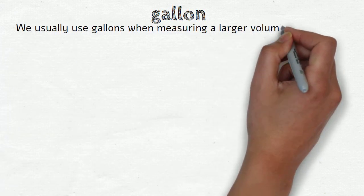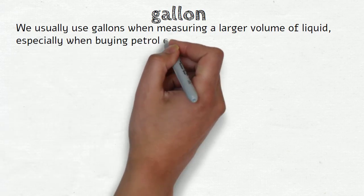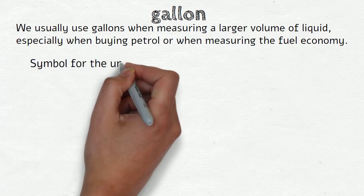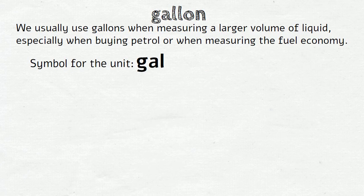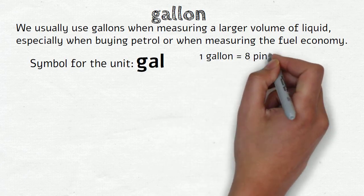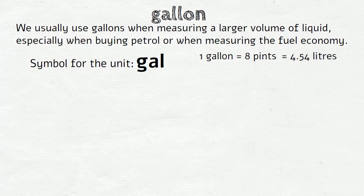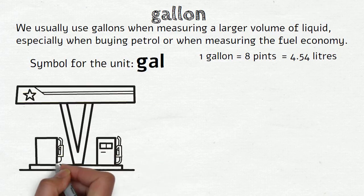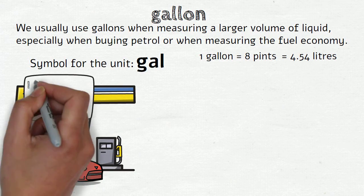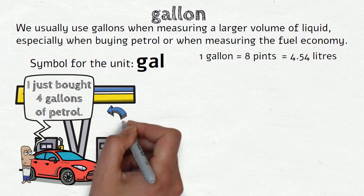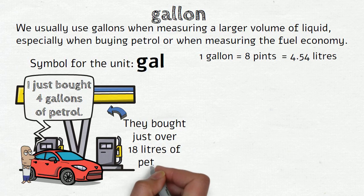Gallon. We usually use gallons when measuring a larger volume of liquid, especially when buying petrol or when measuring fuel economy. The symbol for this unit is gal. And 1 gallon equals 8 pints. It also equals 4.54 liters. So if someone says 'I just bought 4 gallons of petrol,' it means that they bought just over 18 liters of petrol.